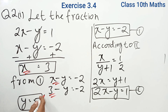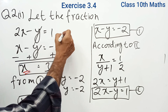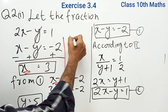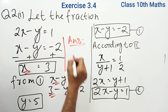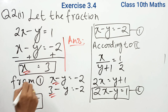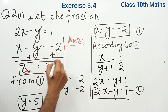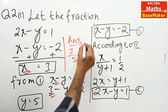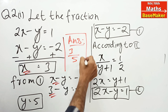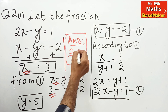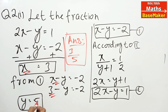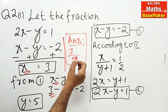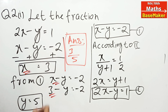We should not stop here — we need to complete the answer. Since we assumed the fraction to be x upon y, our answer is 3 upon 5. The numerator is 3 and the denominator is 5, so the fraction is 3/5.